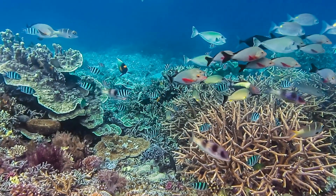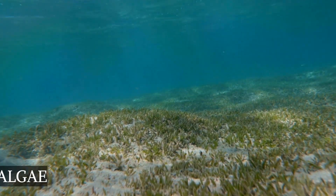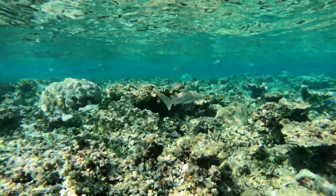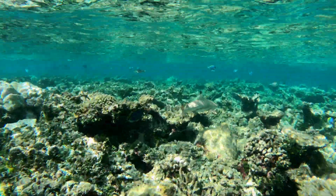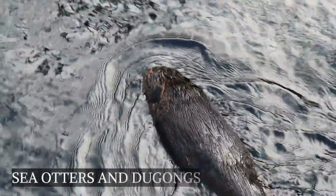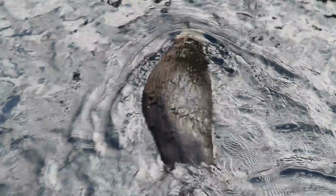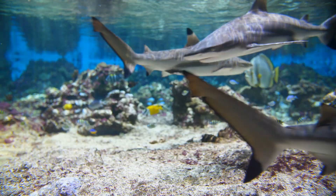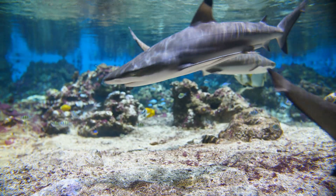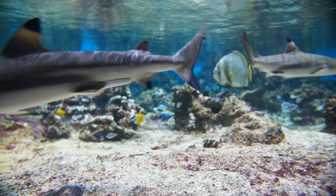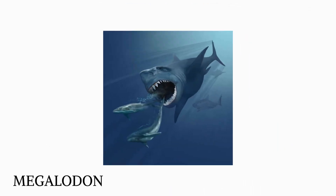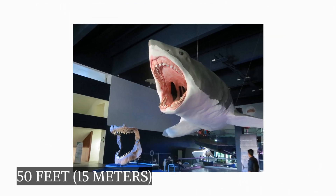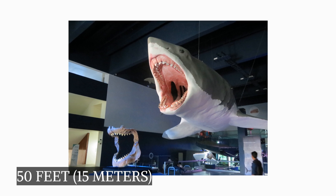In the oceans, kelp, a new species of huge brown algae, clung to rocks and reefs in shallow cold waters, which created new homes for sea otters and dugongs, a marine animal related to elephants. Sharks multiplied in number and once again ruled the oceans. Megalodon, the world's largest shark, measured about 50 feet in length.